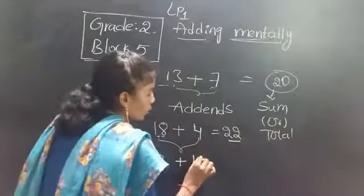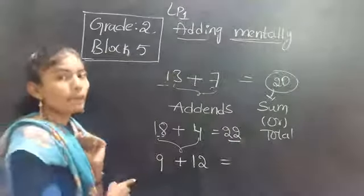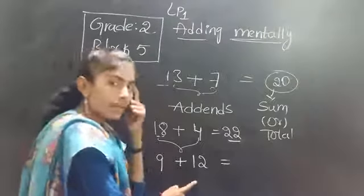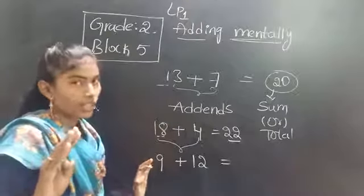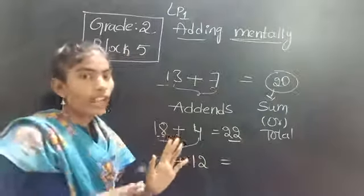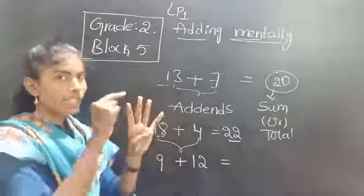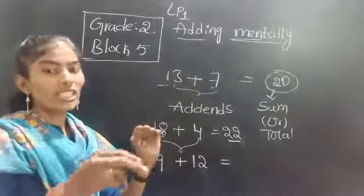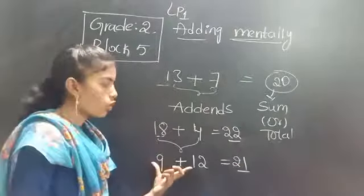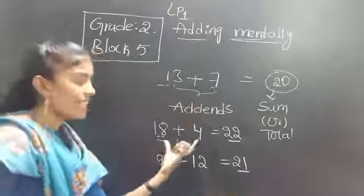One more example — here I have 9 plus 21. What is 9 plus 21? Can you add them? Keep the big number in your mind — 21 is the big number, so keep 21 in mind and take 9 as your fingers. Everyone count along with me: 22, 23, 24, 25, 26, 27, 28, 29, 30. So what is the sum? 30. The numbers which are adding are called addends; the number we get after adding is called sum or total.